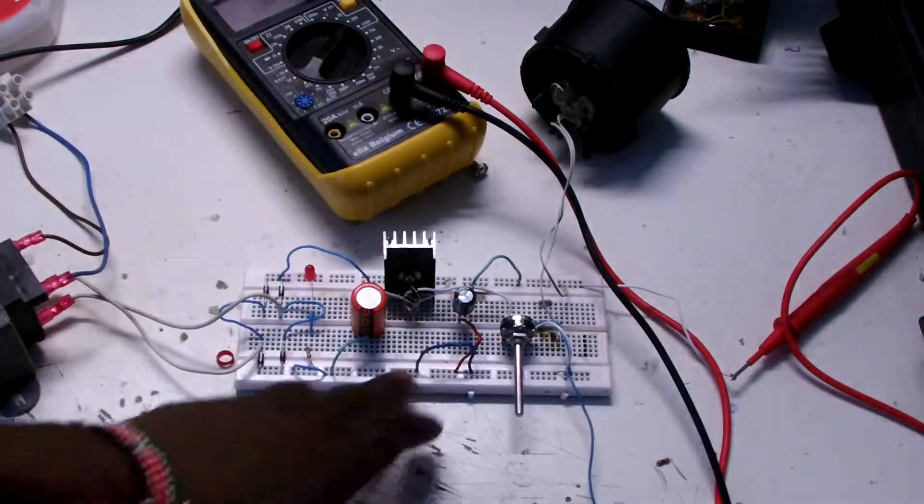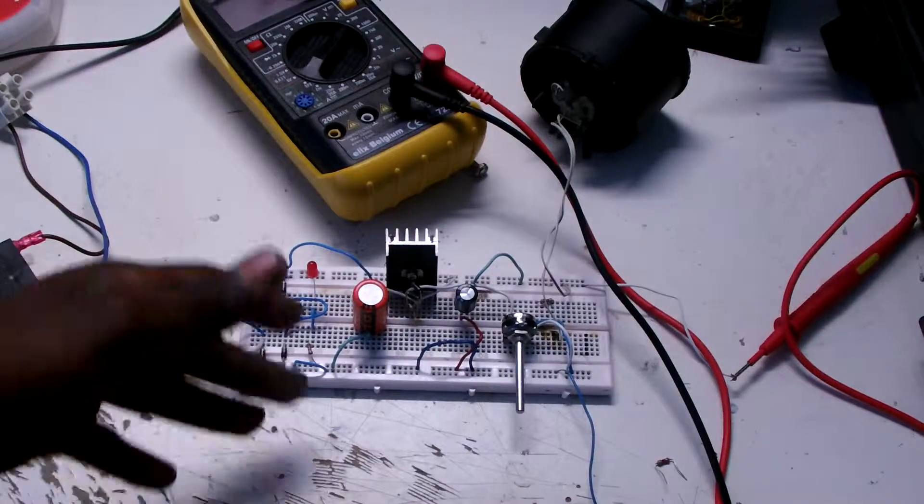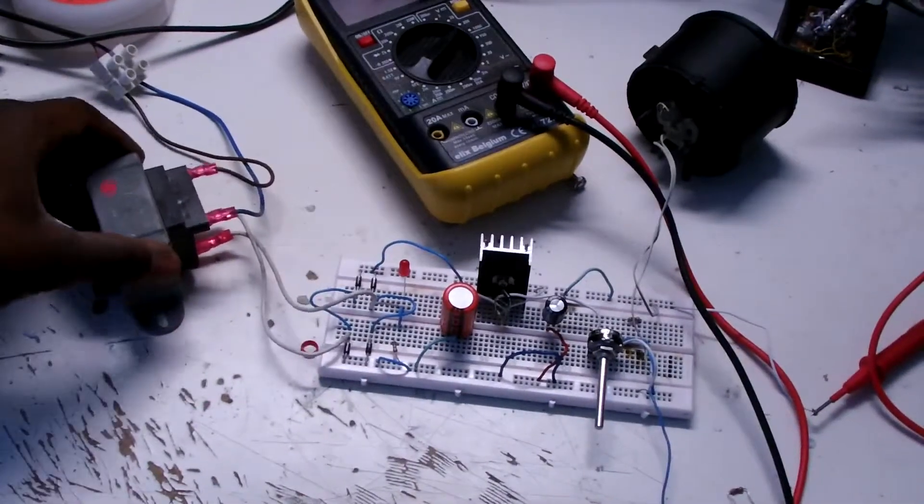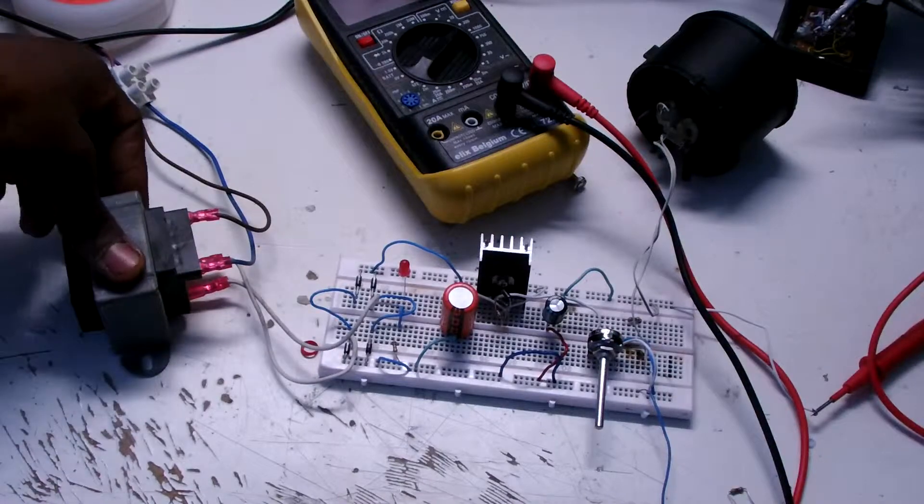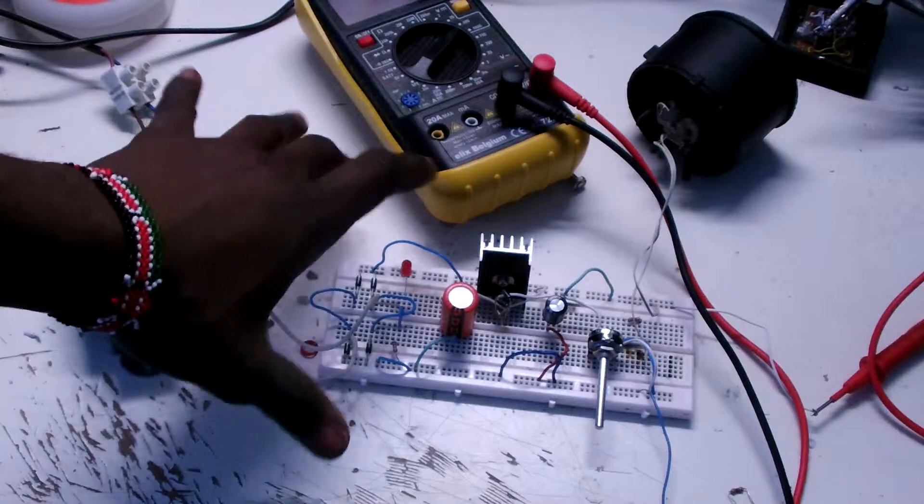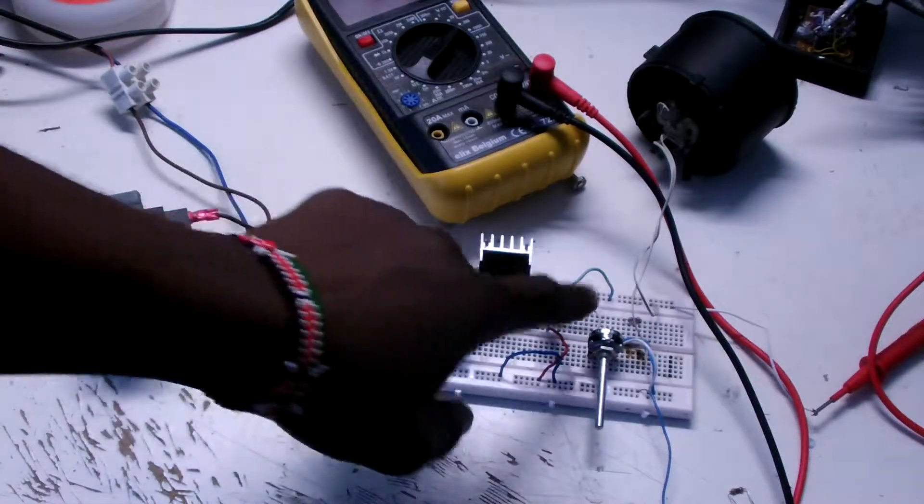Over here we have a transformer and then you have a bridge rectifier, LED for indicating when the power is on, and a couple capacitors for smoothing.